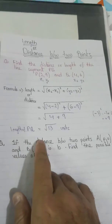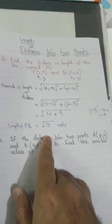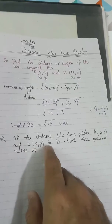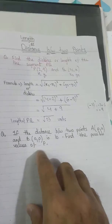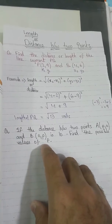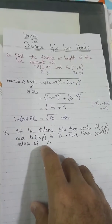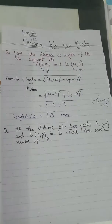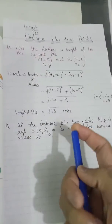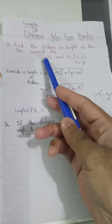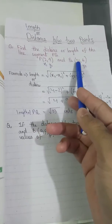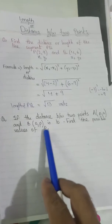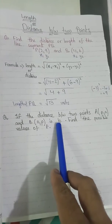The question: if the distance between two points A(p, 0) and B(0, p) is 10, find the possible values of p. This question can be asked in a different way — you can either be asked to find the distance between two coordinates, or you can be asked to find the value of some unknown when the distance is given to you.